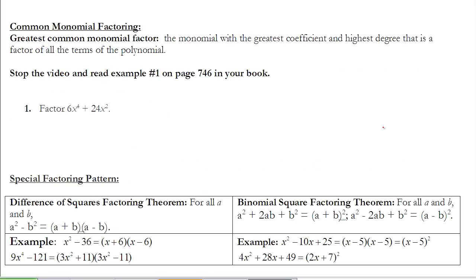When we're trying to factor a polynomial, the first thing we're going to try to do is factor out a monomial. Is there one term that evenly divides into the other terms in that polynomial? We're looking for the greatest term that does that — looking at both the coefficient and the variables to pull out the largest term that evenly divides into both.